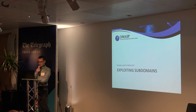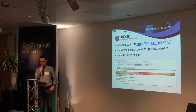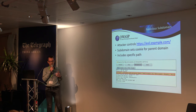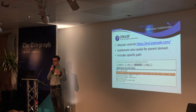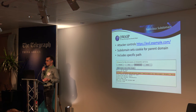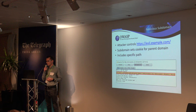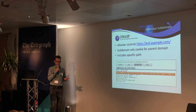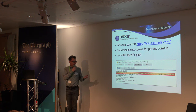Let's look at the first defeat: exploiting subdomains. The first attack vector is that an attacker owns a malicious subdomain. Say you own www.example.com and the attacker has control over a subdomain like evil.example.com. In that case, the attacker can actually set a cookie for the parent domain.